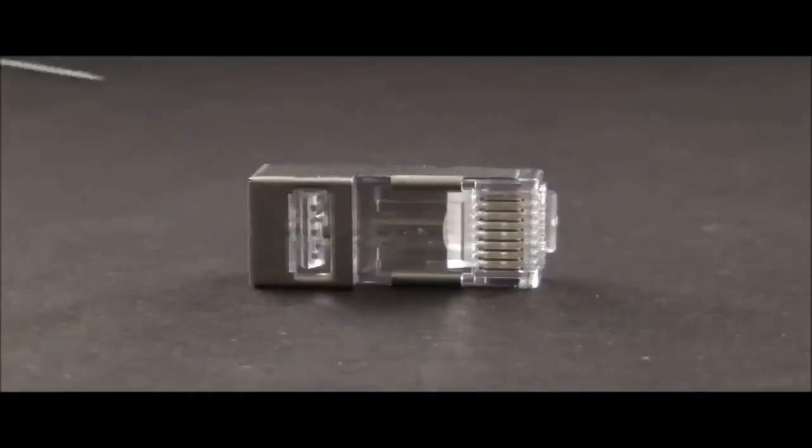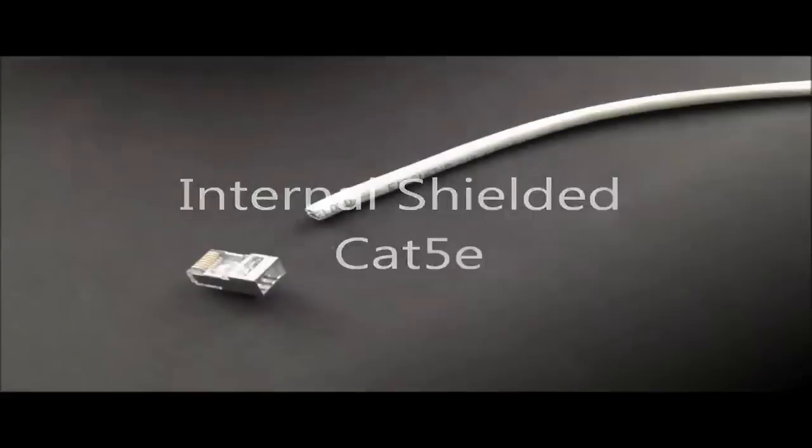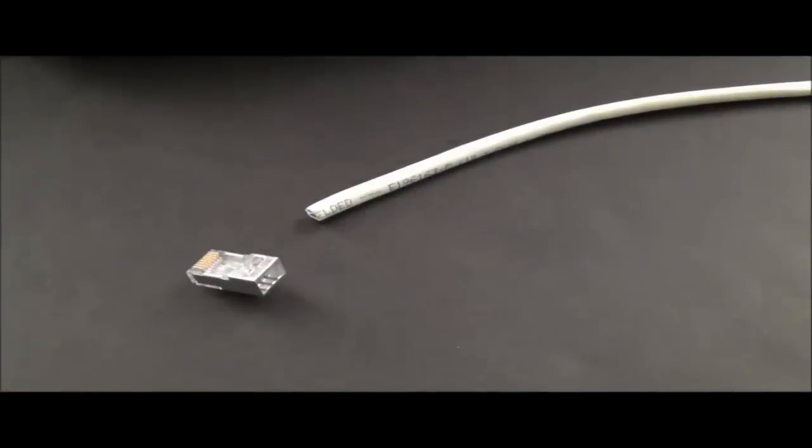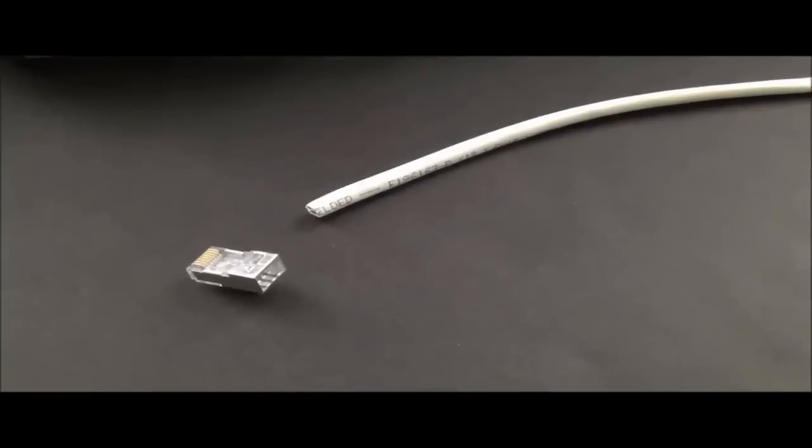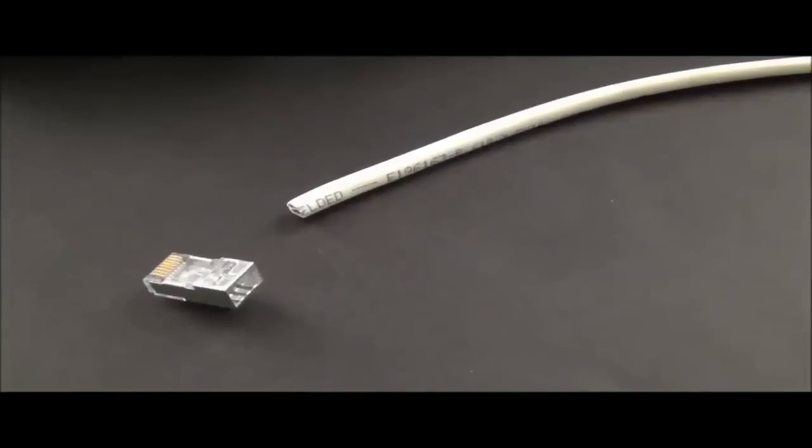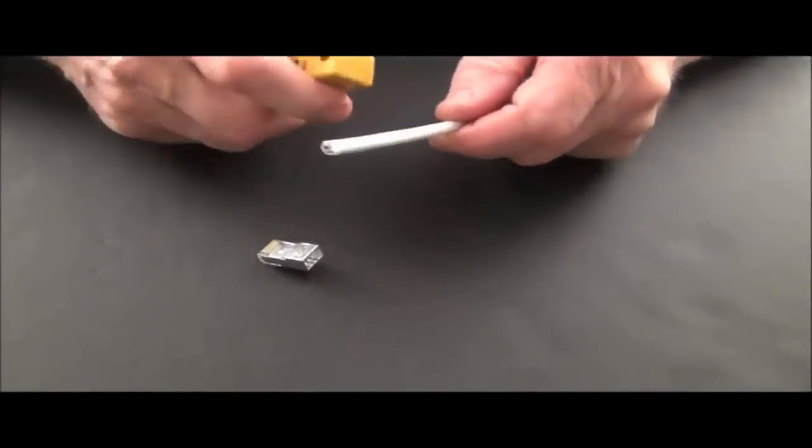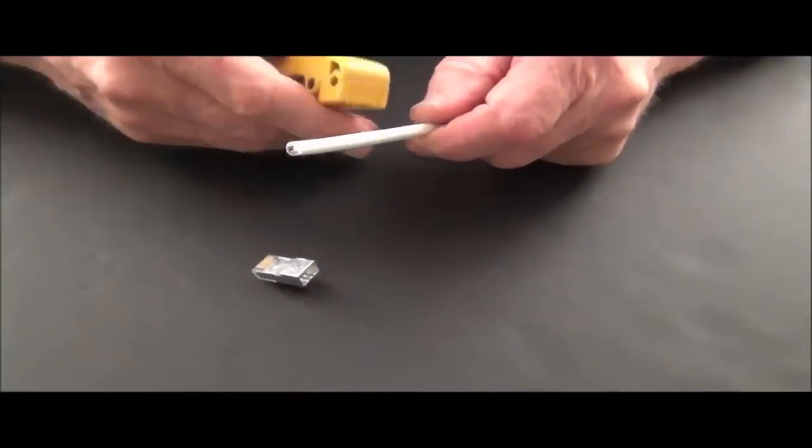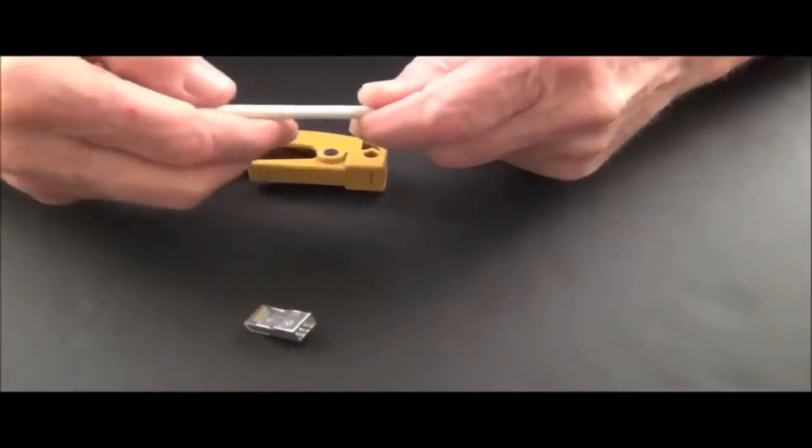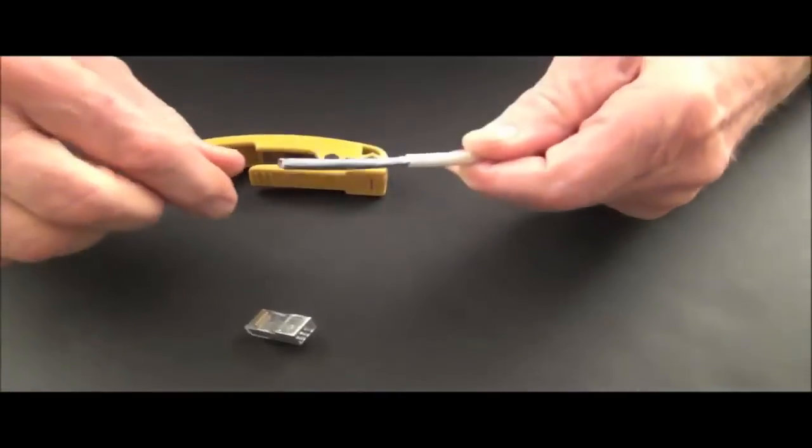So that's how it is. One connector, Cat5e, Cat6, it's all in the prep. Okay, our first termination we're going to do is on the internal shield EZ RJ45 and we're going to do a shielded Cat5e cable. So here's my Cat5e cable and the first thing you're going to want to do is remove the jacket. We're going to score the jacket and pop the cable and remove it.